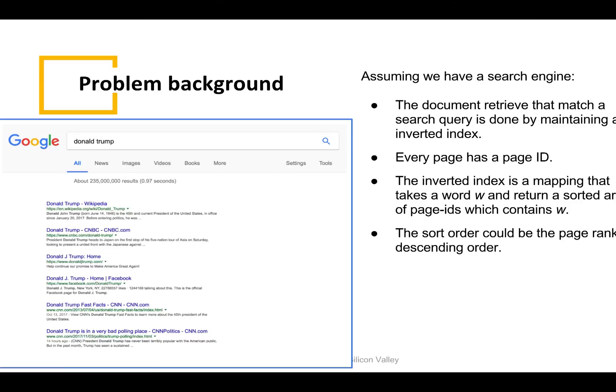In the search engine system, every page has a unique identifier, page ID. An inverted index is a map that takes a word and returns a sorted array of page IDs which contain the word. The sorted order could be the page rank in descending order.